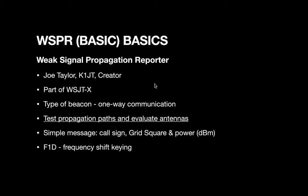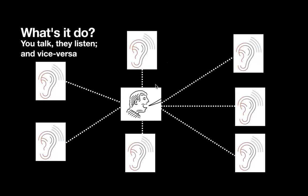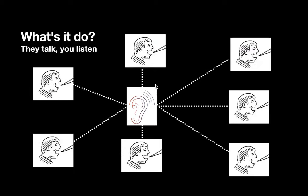Don't get scared that you don't know how to work with dBs. WSPR uses frequency shift keying — and for the technical-minded, it's F1D. Basically, WSPR works like this: you can be a talker, and there are people all over the world who listen to you, or it can be the other way around. You can be a listener, and there are talkers continuously all over the world, and you can look to see if you hear those people.